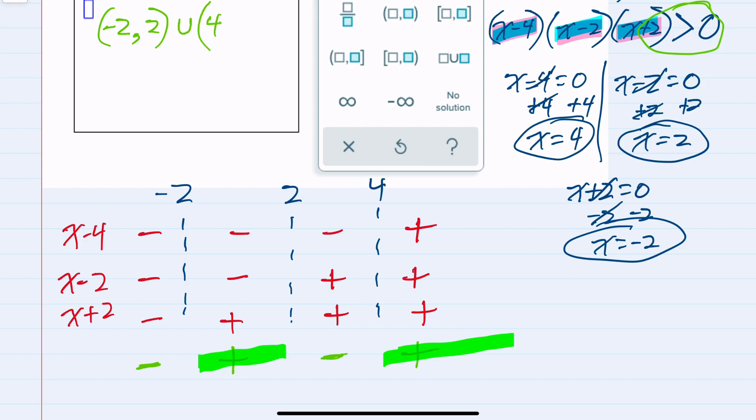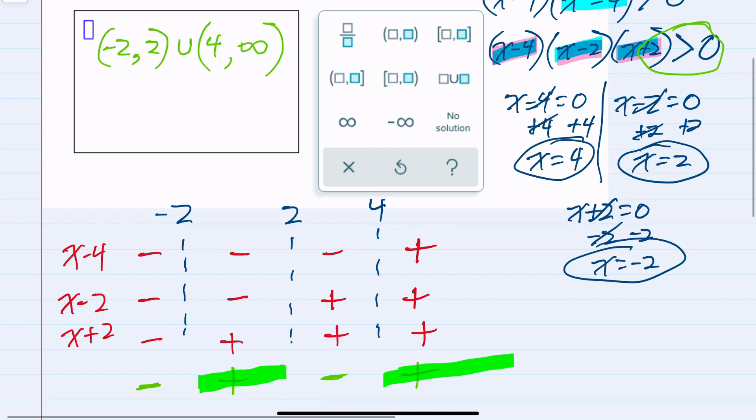And the union with 4. Again, not including it because I only have greater than 0, not greater than or equal to 0. But to the right, this would go on to positive infinity. Any x value in these regions would satisfy our inequality.